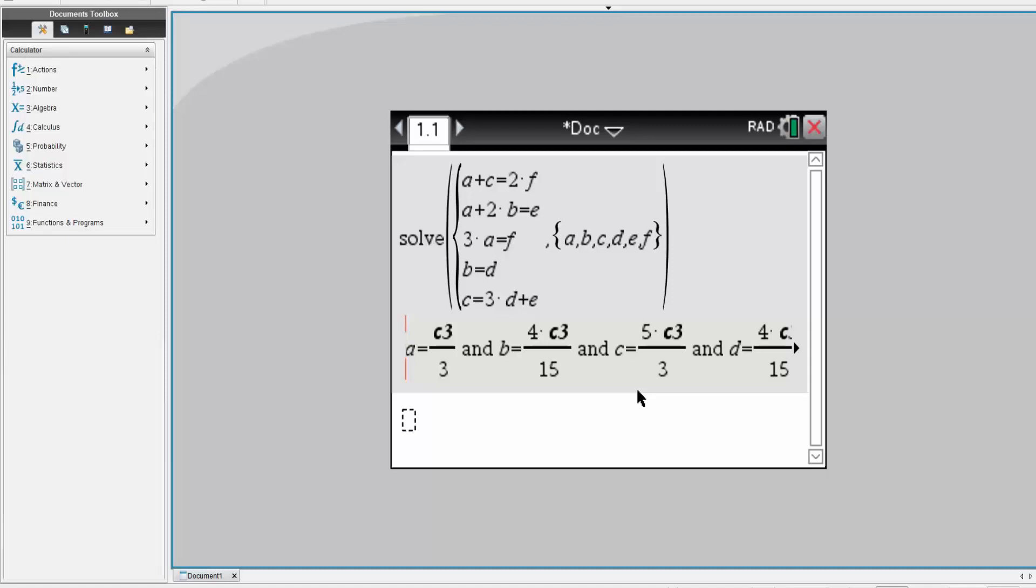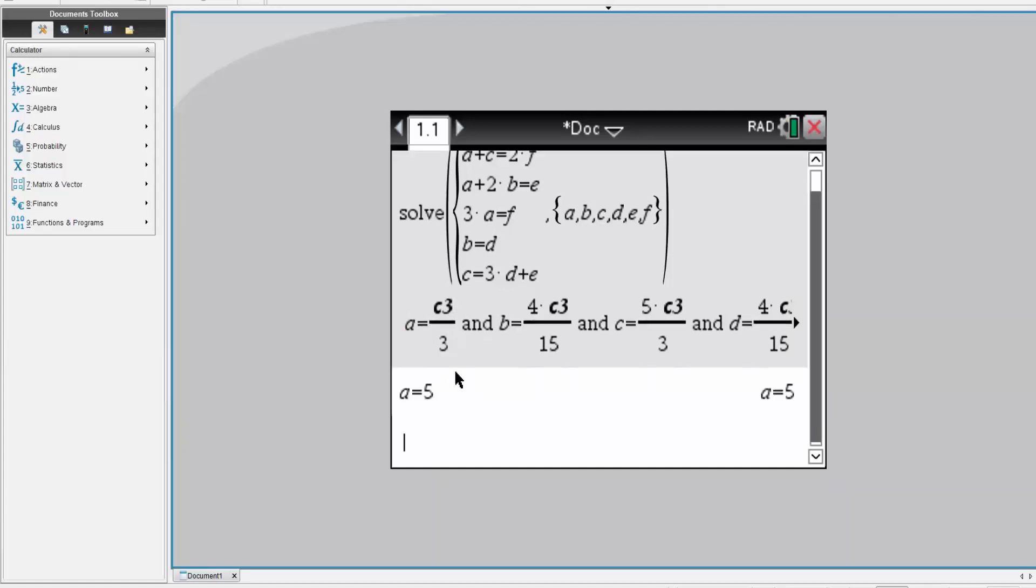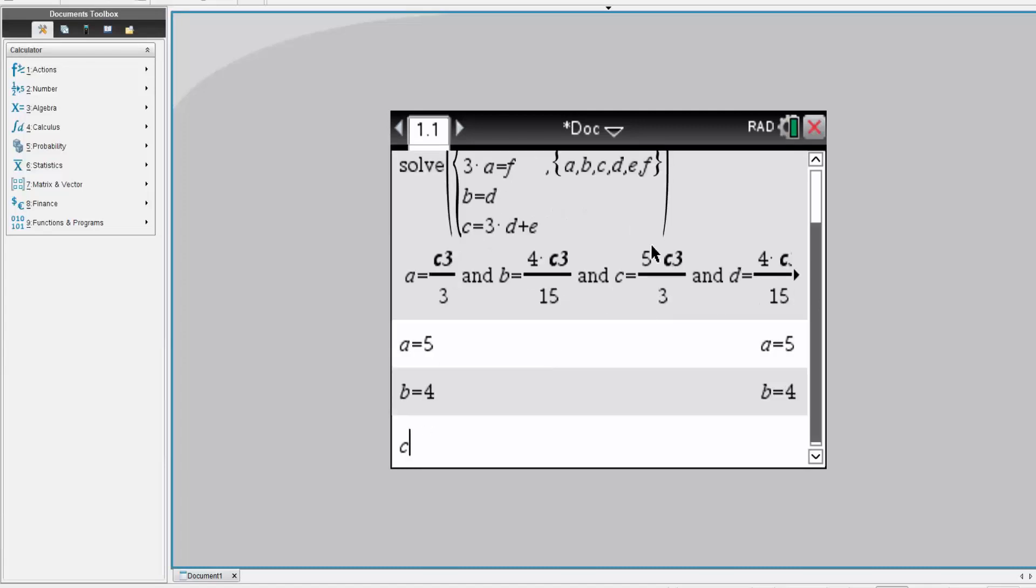So the biggest denominator here would be 15. So every term here, I need to multiply by 15. And so this will mean is A will equal times 15. So 15 divided by 3 is 5. So our A term will be 5. B is equal to times 15. So this will give us 4. C times by 15. So we would get multiplied by 15 for the C term. So actually 15 divided by 3 is 5. 5 times 5 is 25. So C will be 25.